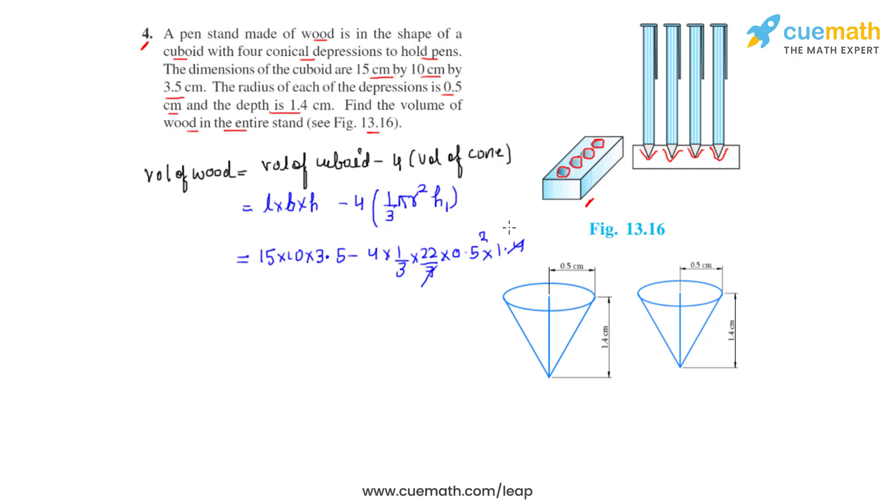This and this gets cancelled, we get 0.2. On further calculation we get the product of 15 times 10 times 3.5 as 525 and the product of this as 1.47.